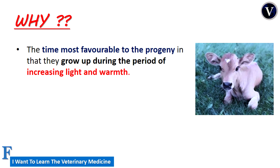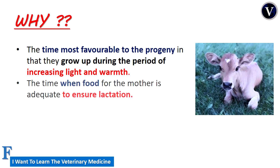When the calf or any progeny is born in spring, the light and warmth can help this calf or progeny to grow well. The second reason is that it is the time when food for the mother is adequate to ensure lactation.